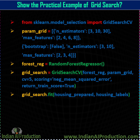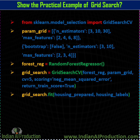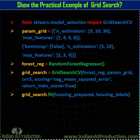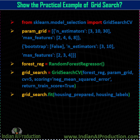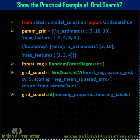Then at the end, fit grid_search by providing two parameters: first your X values (the independent variables) and y (the labels). Here we are passing housing_prepared as the X dataset and housing_label as the y or label dataset.